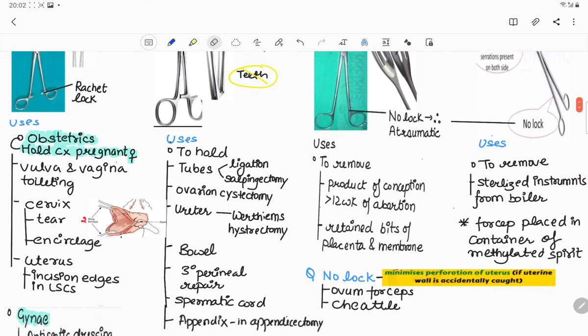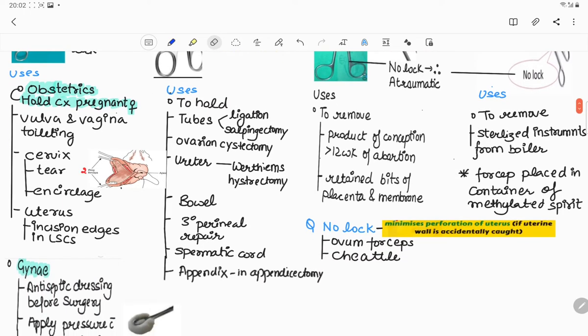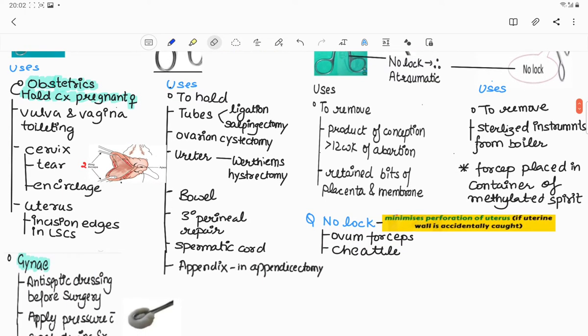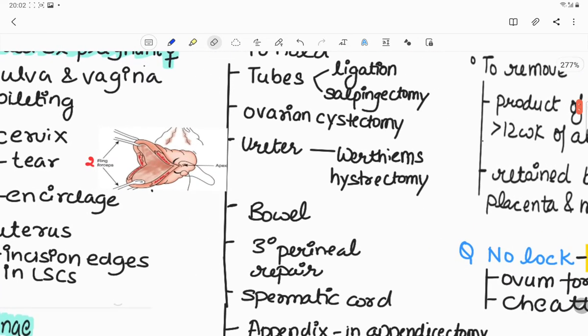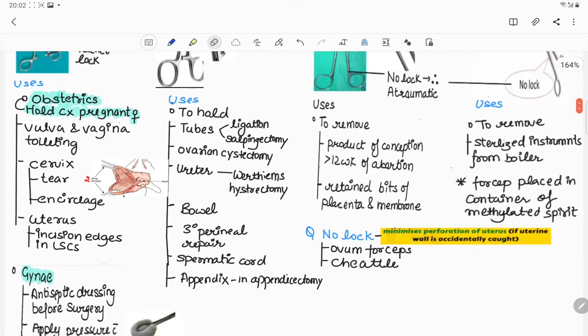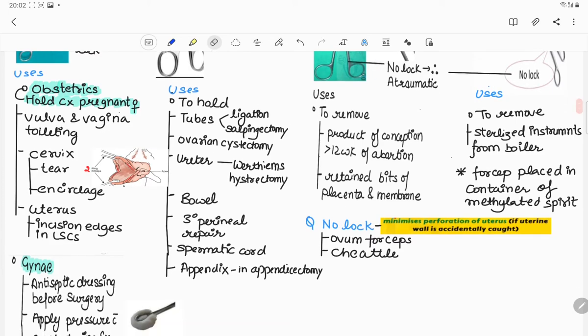In obs it is used to hold the cervix in pregnant female, number one is for toileting the vulva and vagina, number two is for cervical tear repair. As you can see in this picture, two ring forceps are used for cervical tear repair. Number three is for cervical encirclage. In uterus it is used to hold the incision edges in cesarean section, but the best to hold the incision edges is Green Armytage hemostatic forceps.